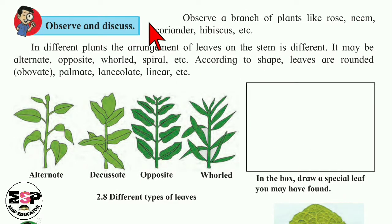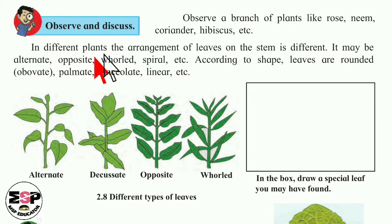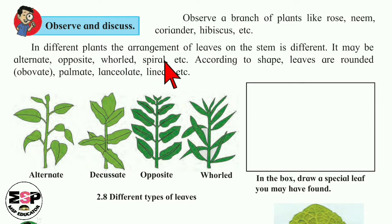Now, observe and discuss. Observe a branch of plants like rose, neem, coriander and hibiscus. In different plants, the arrangement of leaves on the stem is different. It may be alternate, opposite, whorled, spiral, etc. So we can see these types of arrangements in plants' leaves.